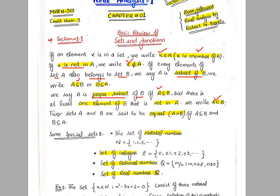Next, two sets A and B are said to be equal if A ⊆ B and B ⊆ A. If both sets satisfy these two conditions, then we say these sets are equal. A and B will be equal when they satisfy these two properties: A is a subset of B, and B is a subset of A.